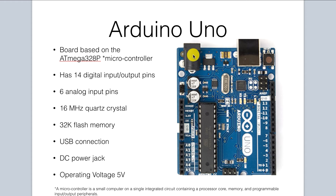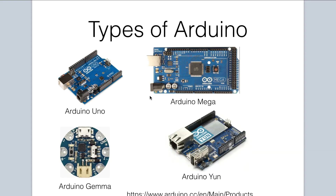There's a DC power jack that can be used to provide additional power to the Arduino microcontroller. The operating voltage of the Arduino is 5 volts. There are many different flavors of Arduino, but as we already mentioned, the Arduino Uno is the version we'll be using for this class.